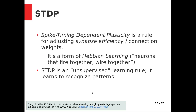Spike timing dependent plasticity is a rule for adjusting synapse efficiency and connection weights. It is a form of Hebbian learning — the motto being 'neurons that fire together wire together.' The Hebb postulate is from the 1940s; STDP came in the 1980s or 90s. We can think of it as an unsupervised learning rule: neurons learn to associate with other neurons without an explicit error signal, learning pattern recognition and associating certain outputs with certain inputs — essentially feature detection.